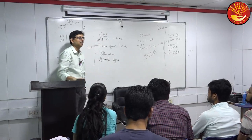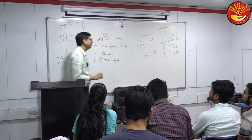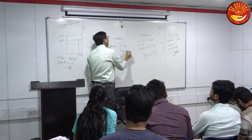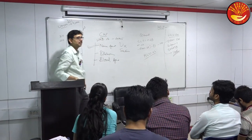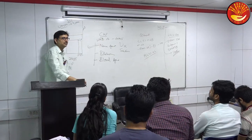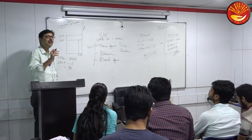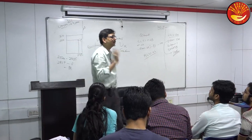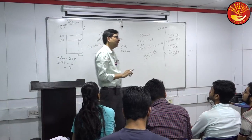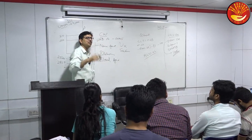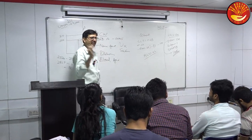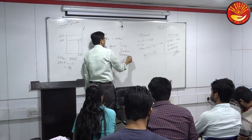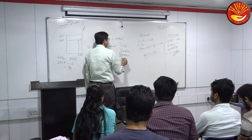Examples of nerve agents: VX and Sarin. There is no comparison — VX is a hundred times more powerful than Sarin. There are other names too, like Taboon, but they are less likely to be asked. VX is the most powerful among all nerve agents.